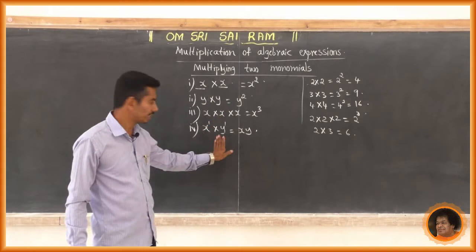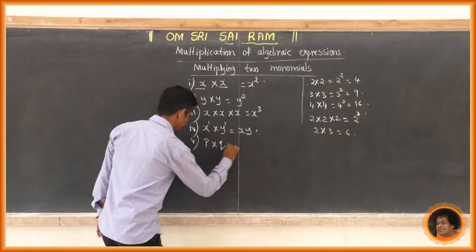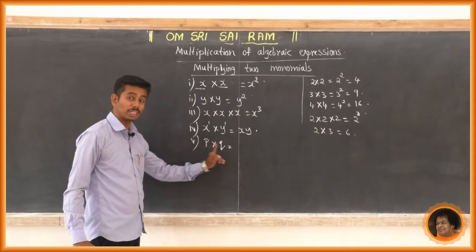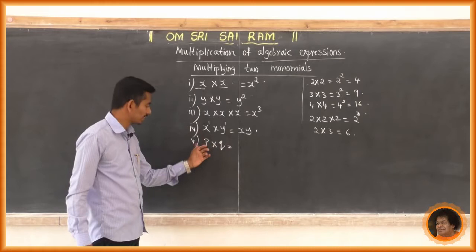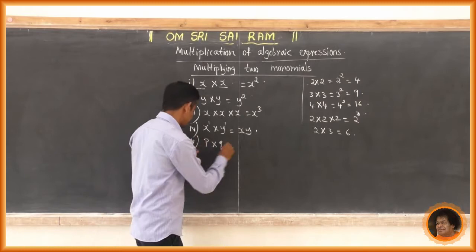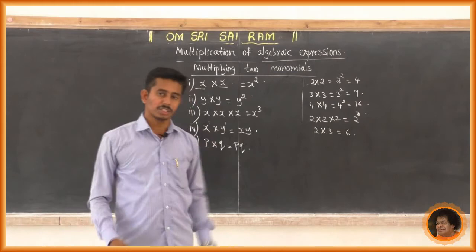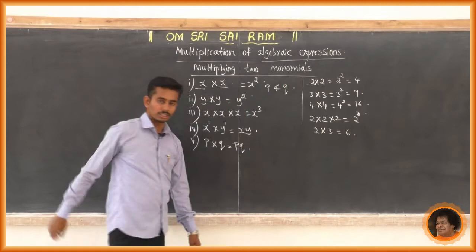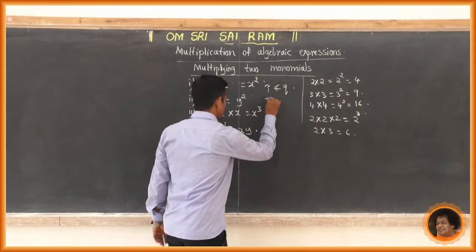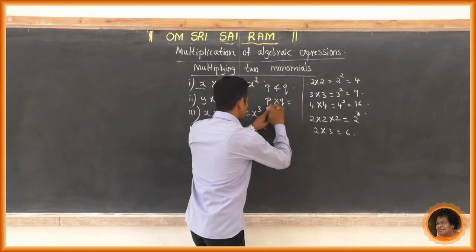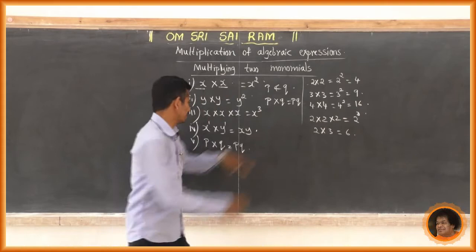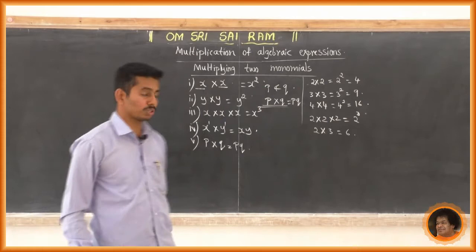What is p into q? p and q are different variables. If we multiply p into p it is p squared, or q into q is q squared. But p into q gives pq. In an exam they ask: find the product of p and q. Find the product means multiplication, so p and q means p into q, and we write it simply as pq.